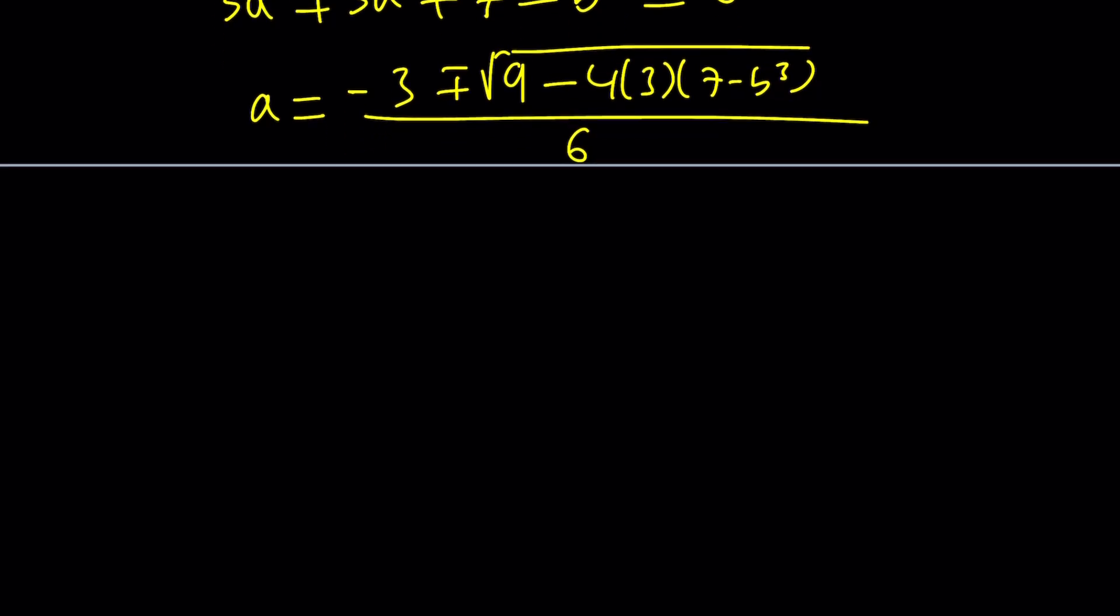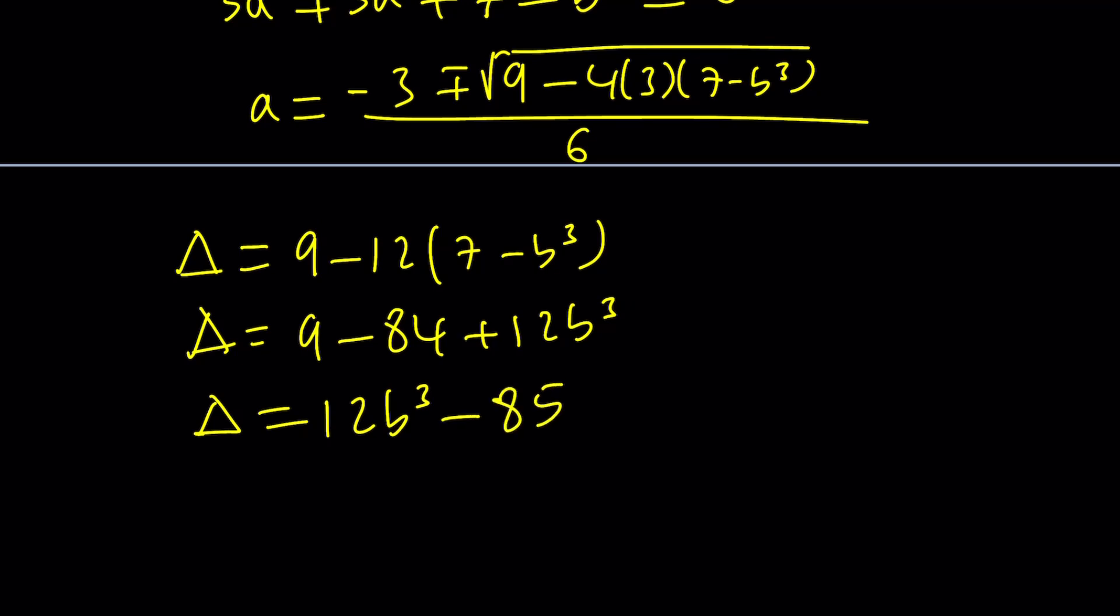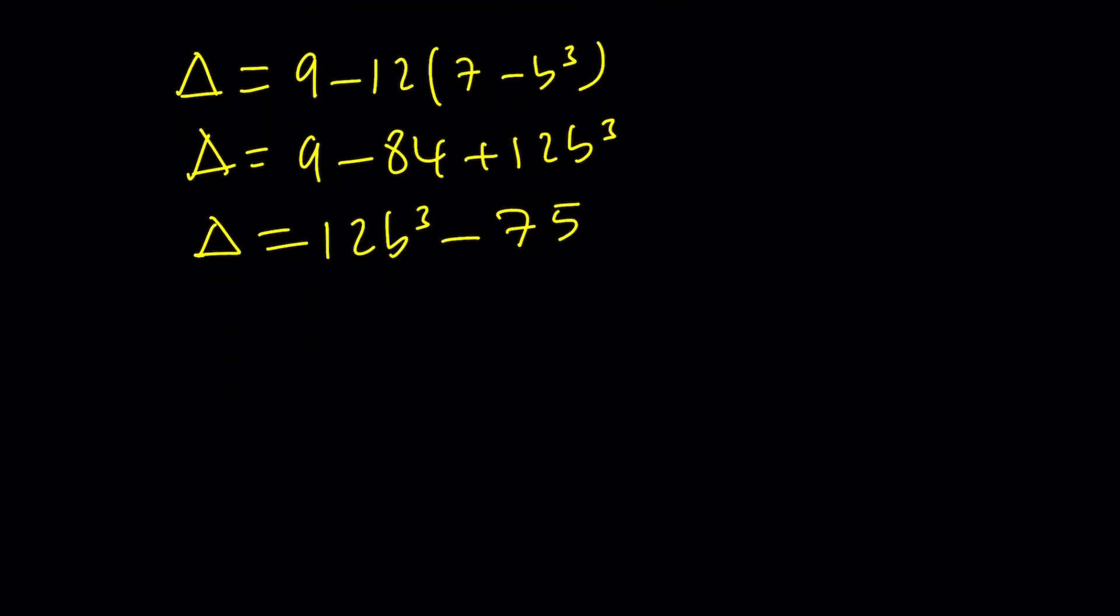Inside the radical, let's focus on the discriminant, or delta. Delta is going to be 9 - 12(7 - b³), and we can write it as 9 - 84 + 12b³, or 12b³ - 75. Is that right? Yeah, I think so.